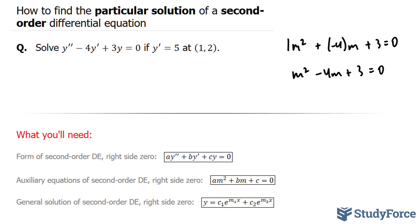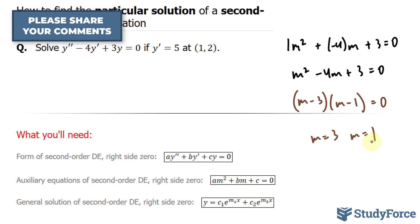The next thing that I want to do is factor this. What two numbers multiply to 3 and add to negative 4? The answer to that is simple, it's minus 3 and negative 1. So we have (m minus 3)(m minus 1) is equal to 0, therefore if we solve for m, we end up with m is equal to 3 and m is equal to 1.